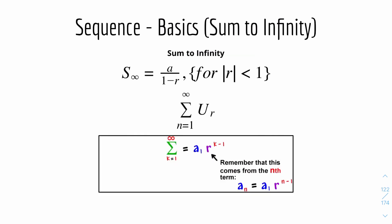Now we have sum to infinity. The formula is S-infinity equals A over (1 minus R). This only works if the modulus (absolute value) of R is less than 1. Another notation for this is sigma with n equals 1 going to infinity.